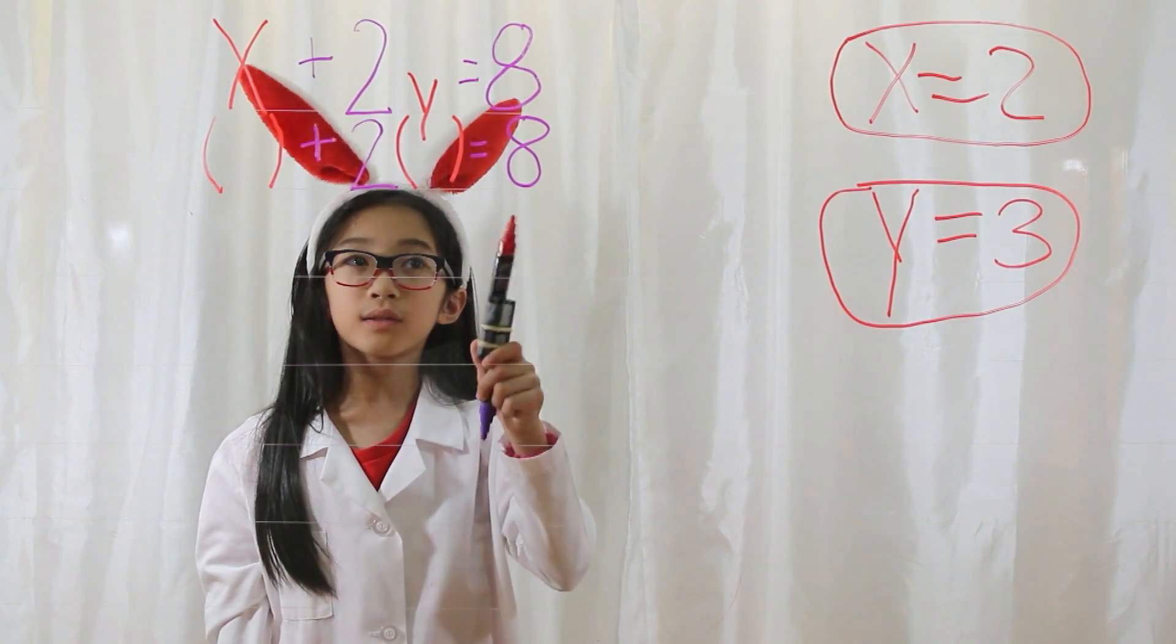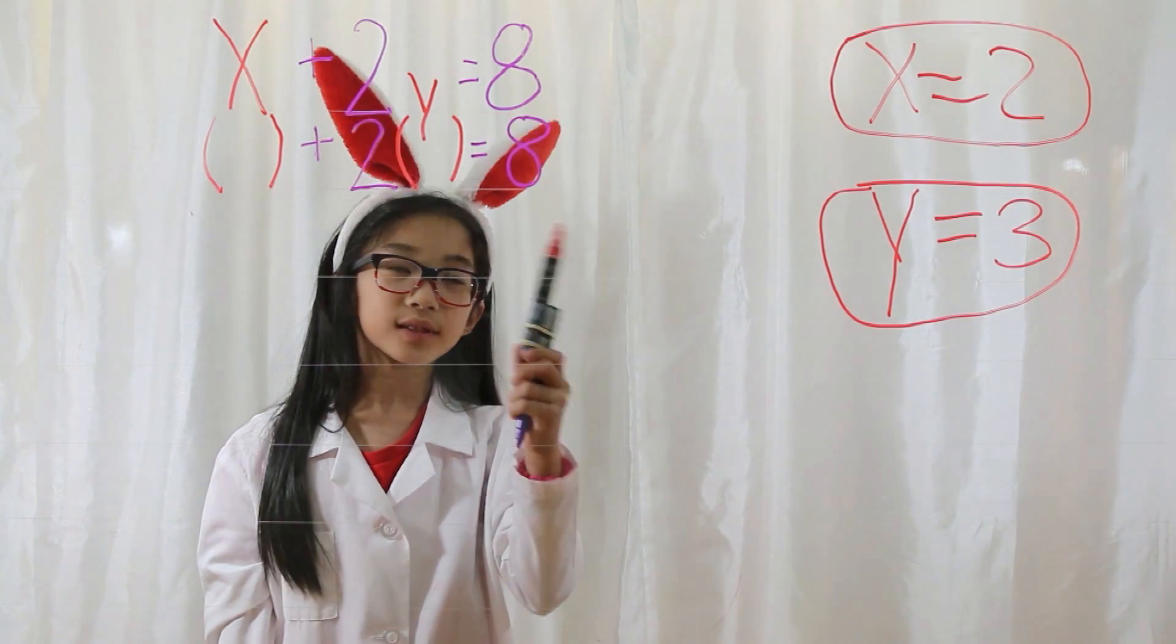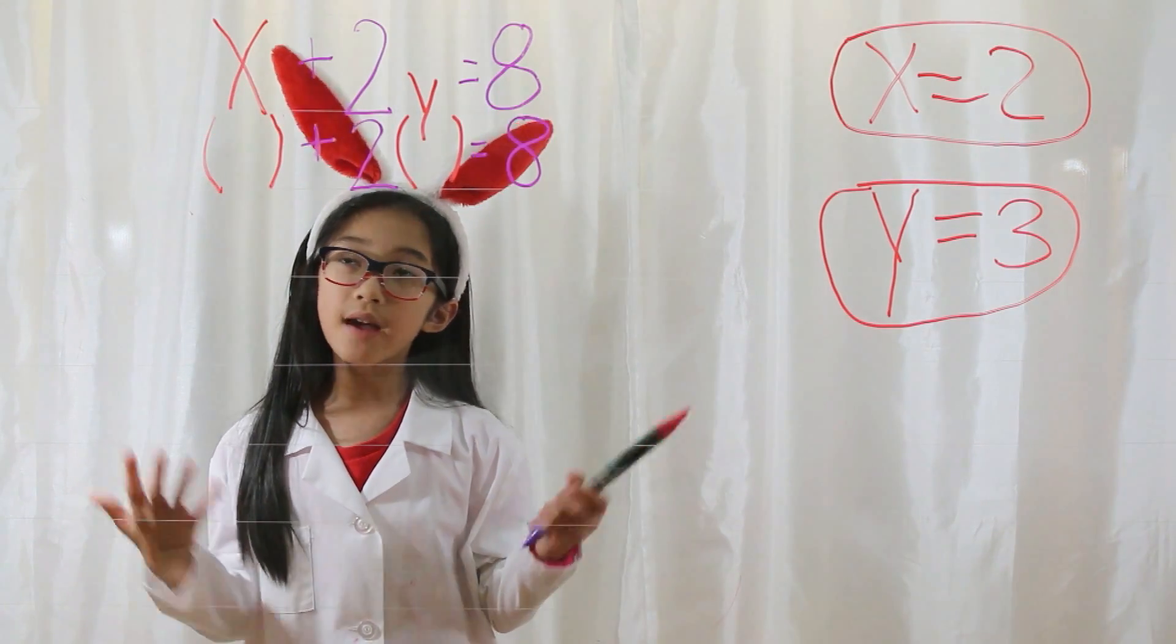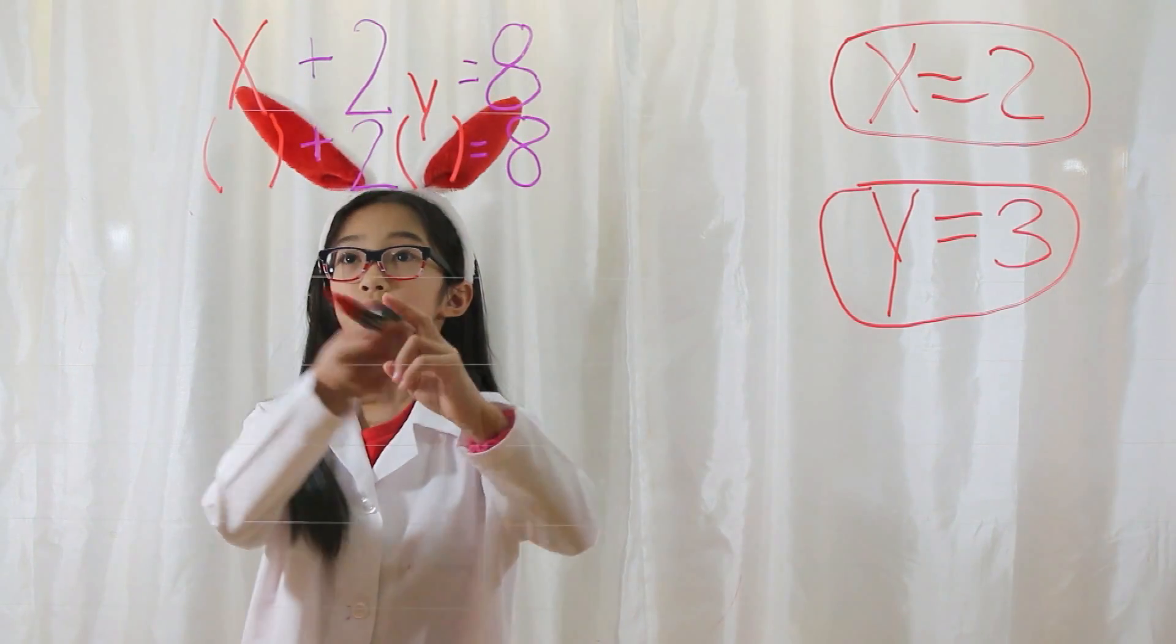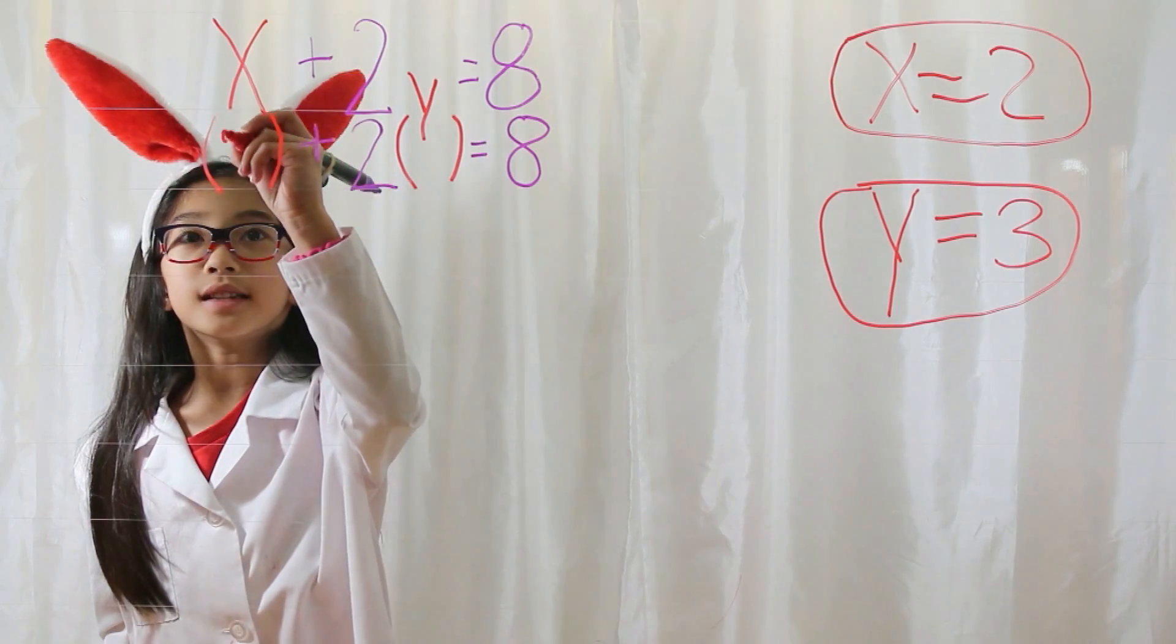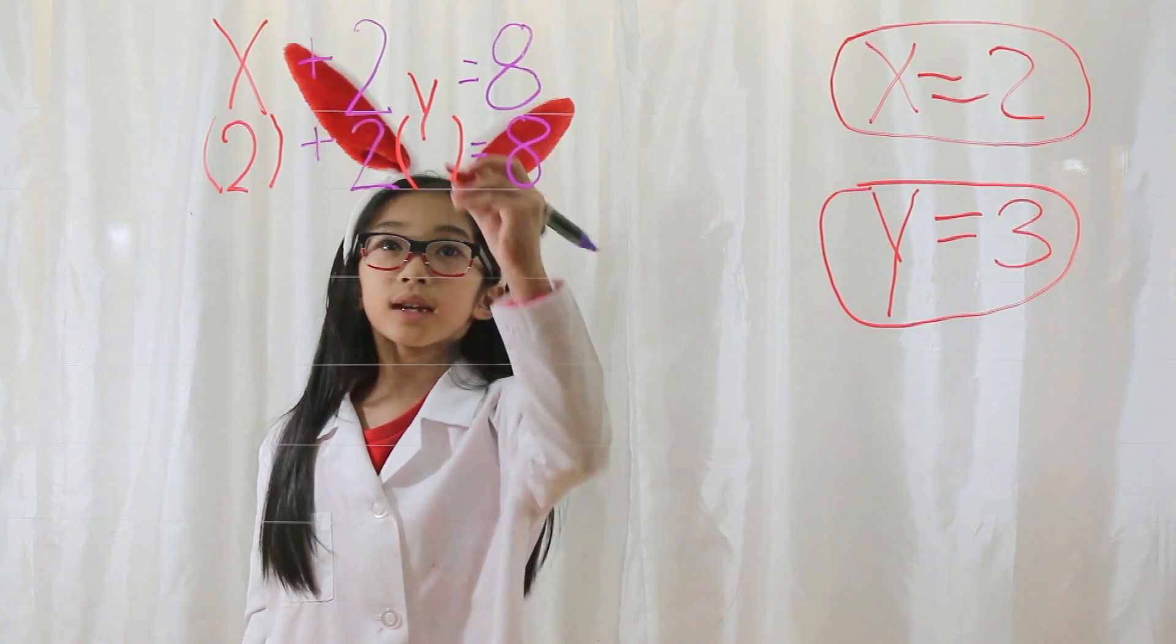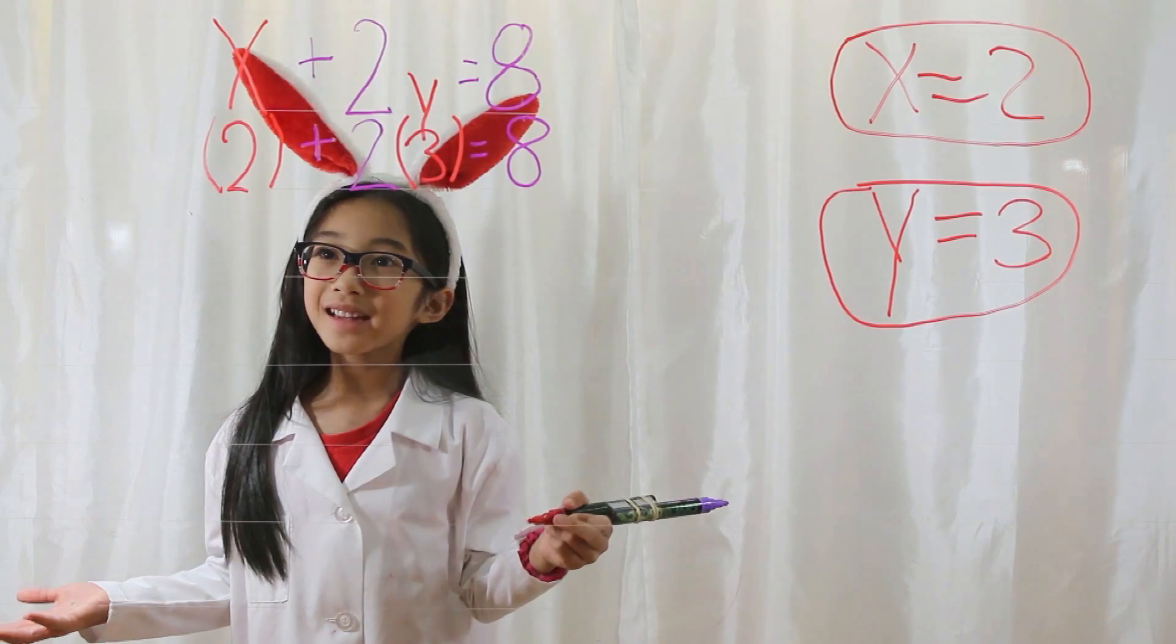x plus 2y equals 8. Parentheses plus 2 parentheses equals 8. What goes in the parentheses? Whatever equals that variable. So x is equal to 2, so 2 would go in the x parentheses. And since y is equal to 3, 3 would go in the y parentheses.